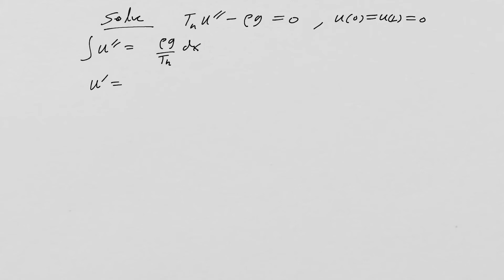And we get u' is equal to ρ·g over T_h times x plus C1. That's that free parameter from integration. We integrate one more time, and we get u of x is equal to ρ·g over T_h